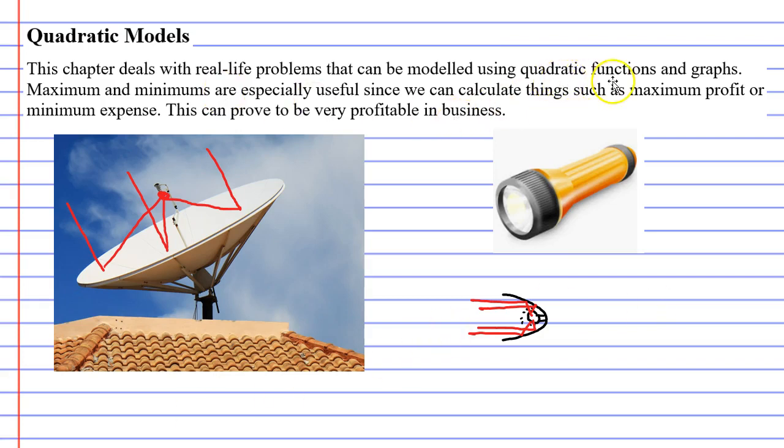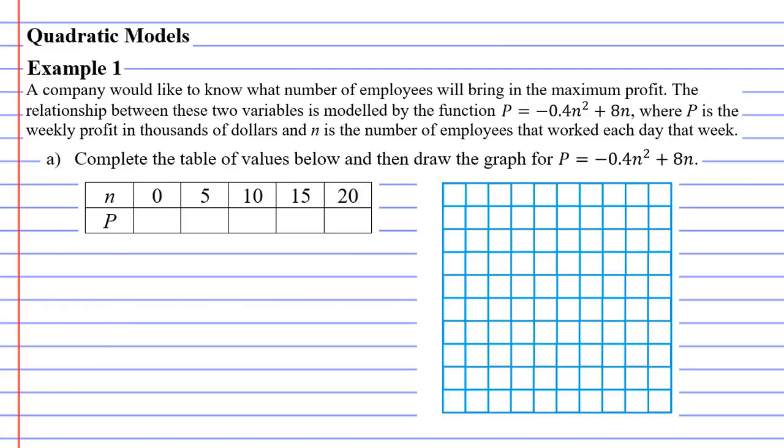Another thing that makes our quadratic functions and graphs really useful is they are great when you need to deal with things such as maximums and minimums. This can prove to be very profitable for a business when they want to maximize profits and minimize expense. Anyway let's move on to our example now. Example 1, a company would like to know what number of employees will bring in the maximum profit.